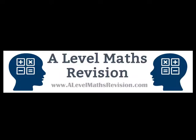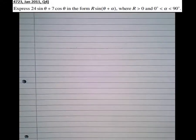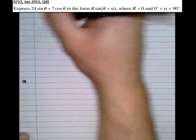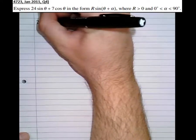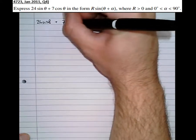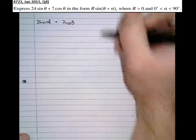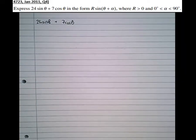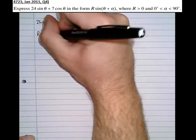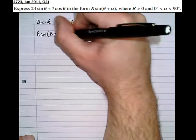In this tutorial video, we're going to look at expressing the sum of two trigonometric expressions, sine and cos, in a single compound trig expression. This question asks us to express 24 sine theta plus 7 cos theta in the form R sine of theta plus alpha.